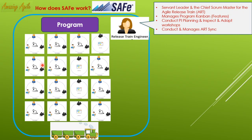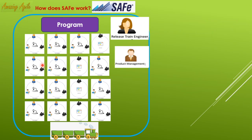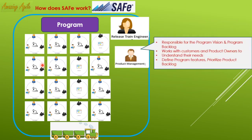The RTE manages the program Kanban board, handles PI Planning, and conducts Inspection and Adapt workshops. They also conduct and manage ART sync — managing the entire activity together with status updates. The next role is Product Management, who is the chief Product Owner. Their responsibilities include vision and program backlog preparation, working with customers and product owners to understand requirements, and defining program features and priorities for the program backlog.